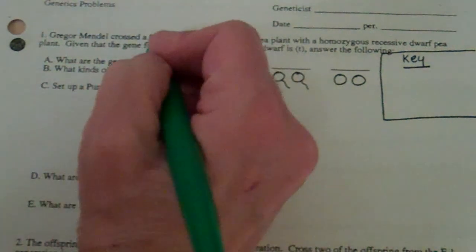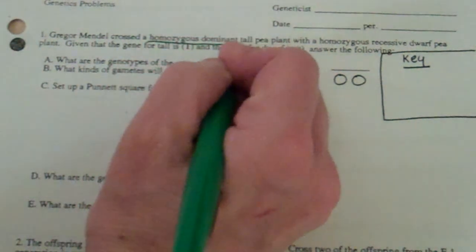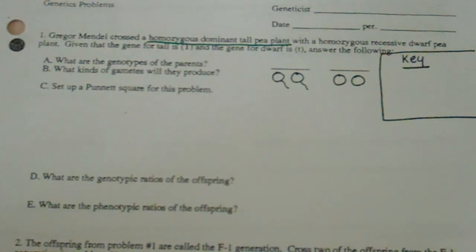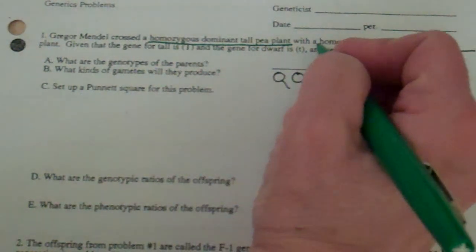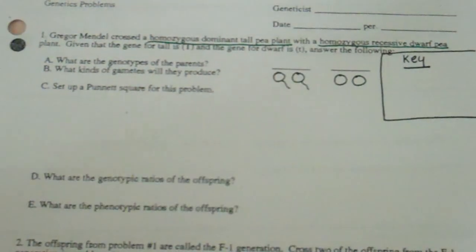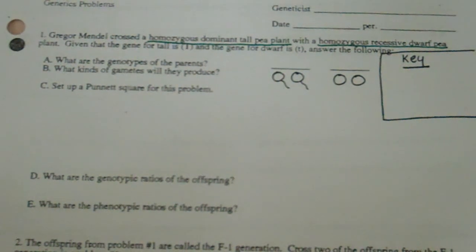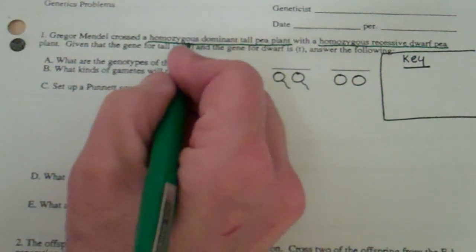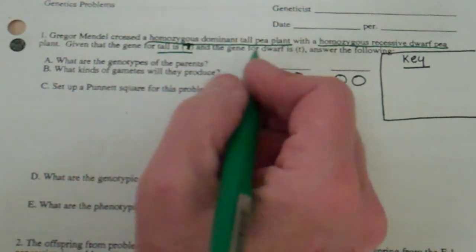Gregor Mendel crossed a homozygous dominant tall pea plant with a homozygous recessive dwarf pea plant. Given that the gene for tall is big T and the gene for dwarf is little t, answer the following.